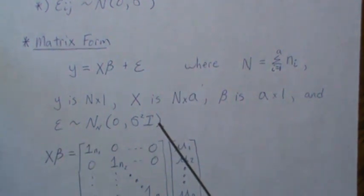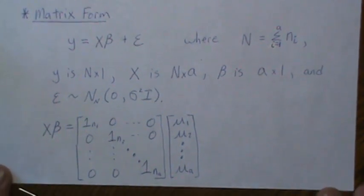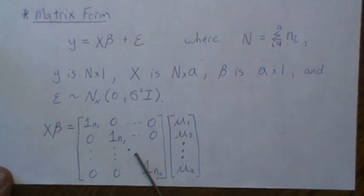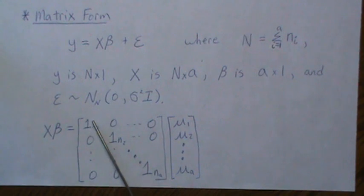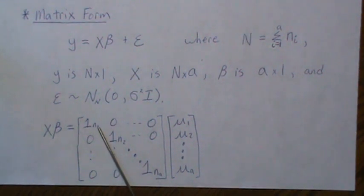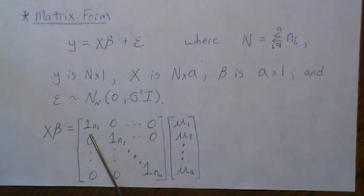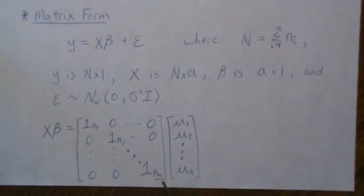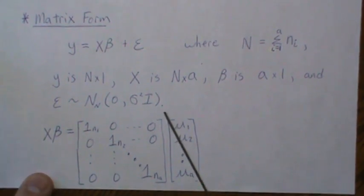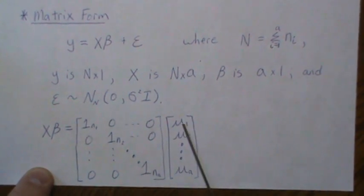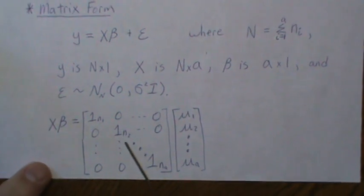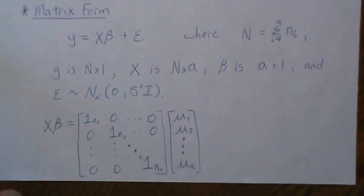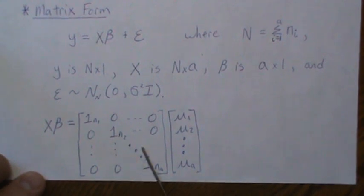Here is the design matrix for the means model. However many subjects or elements are in group 1, there are that many ones in the first block — so when you multiply that block by the group mean you get the right value. It's block diagonal with ones down the diagonal, each block corresponding to a group.